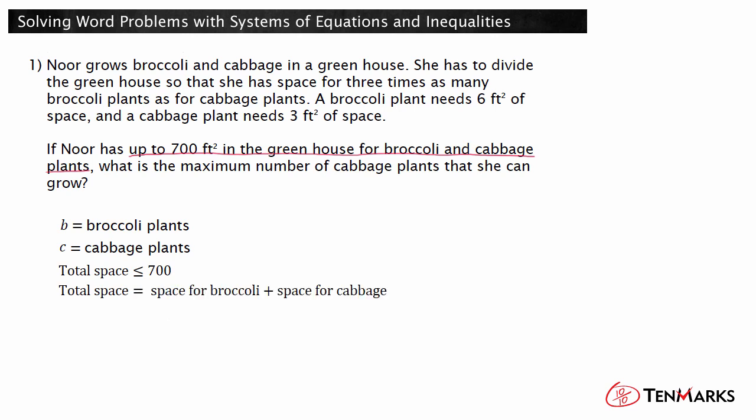The space is divided between the broccoli plants and the cabbages. The space taken up by broccoli plants is the product of the space taken up by one broccoli plant — six square feet — and the number of broccoli plants B. The total space taken up by cabbage plants is the product of the space taken up by one cabbage plant — three square feet — and the number of cabbage plants C. Therefore, the total space taken is six times B plus three times C.